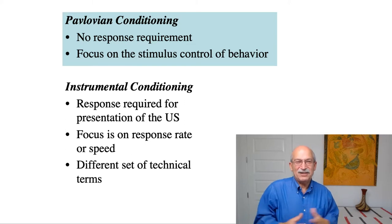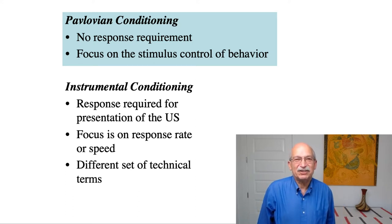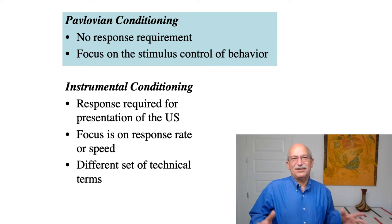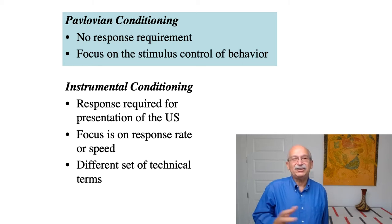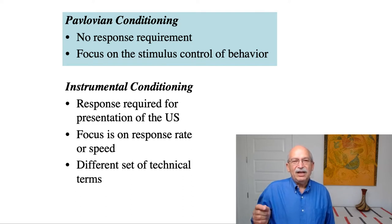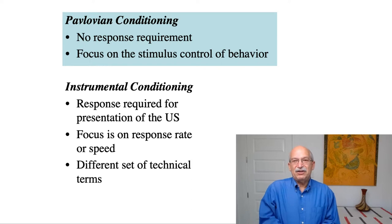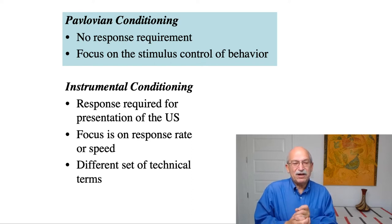There is no particular response that has to happen in order for any of the procedures to play out, and yet behavior emerges nevertheless. So in a sense, Pavlovian conditioning represents the adjustments of organisms to situations that they don't have any control over. In contrast, in an instrumental or operant conditioning situation, a response is required to produce an unconditioned stimulus like food or shock. So if the subject doesn't make the response, the food doesn't appear.